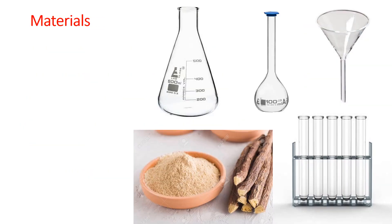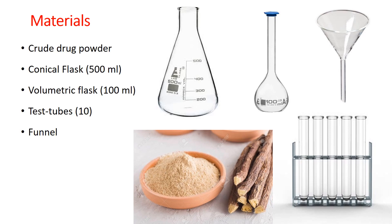The materials required for this experiment are a volumetric flask, conical flask, funnel, test tubes, and the crude drug for which we need to determine the foaming index. Make sure when choosing the conical flask, it should be minimum 500 ml because we will be boiling the contents in this flask. If the drug has a high foaming index, froth generated during boiling can overflow the container, cease the burner flame, and allow gas to accumulate in your lab. So make sure you are using a larger vessel.